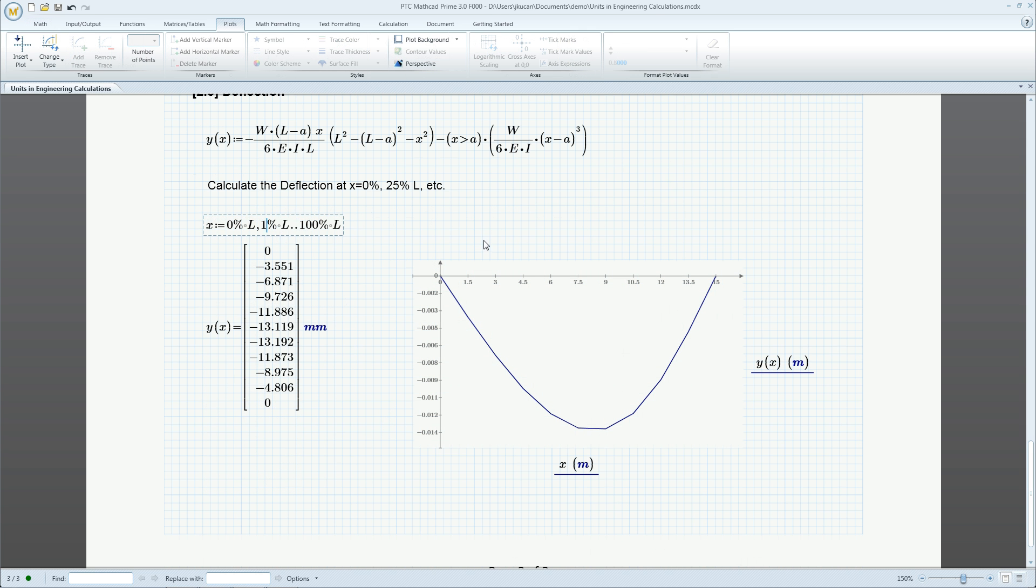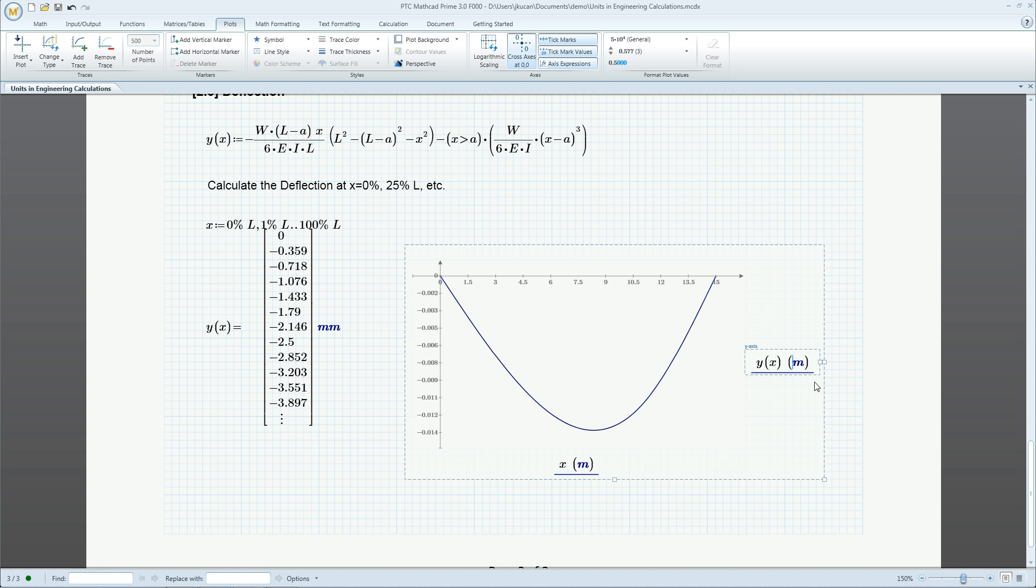We add more points to make it smoother. Axes are displayed in meters, but we can replace the displacement with millimeters, giving us cleaner y-axis values.